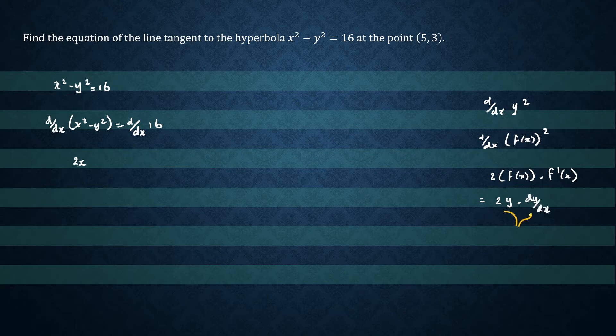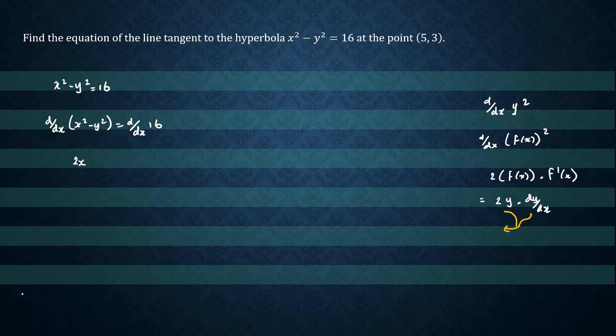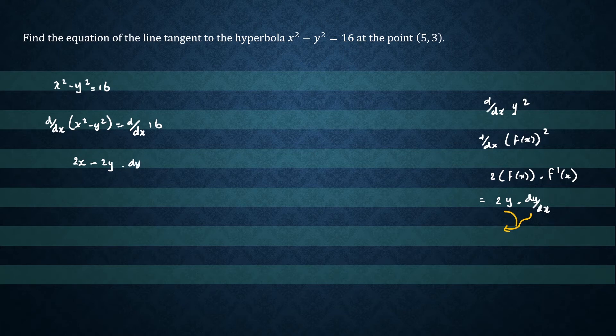Now we'll insert that back to our question. So we'll write that as 2y times dy/dx. And differentiating a constant will give you 0.